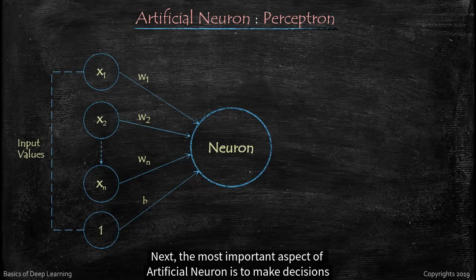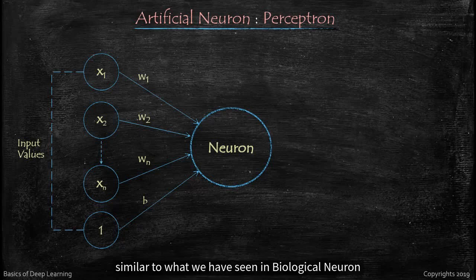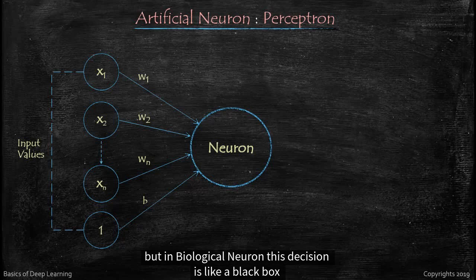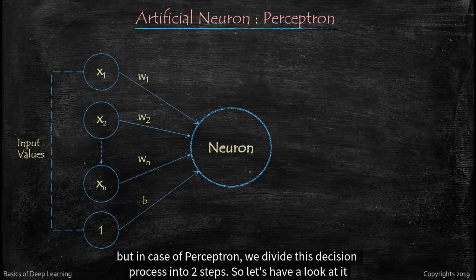Next, the most important aspect of artificial neuron is to make decisions similar to what we have seen in biological neuron. But in biological neuron, this decision is like a black box that we are unaware what exactly is happening in nucleus. But in case of perceptron, we divide this decision process into two steps.